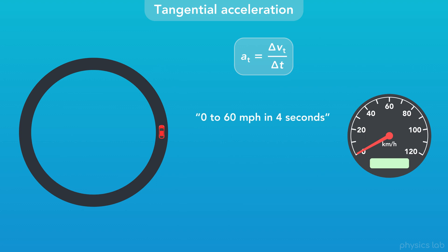If someone says their car can do 0 to 60 miles per hour in 4 seconds, or maybe 0 to 100 kilometers per hour in 4 seconds, they're describing the acceleration of their car. If the car is traveling in circular motion, then it would be the tangential acceleration of their car, which is the change in tangential velocity divided by a period of time.